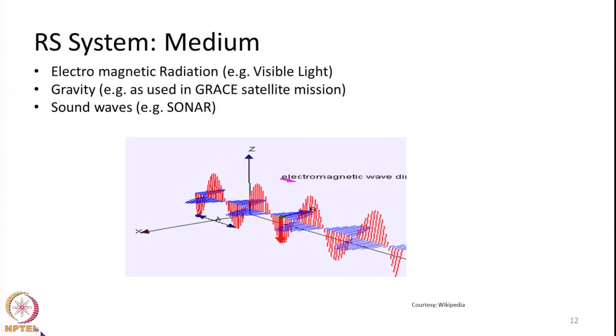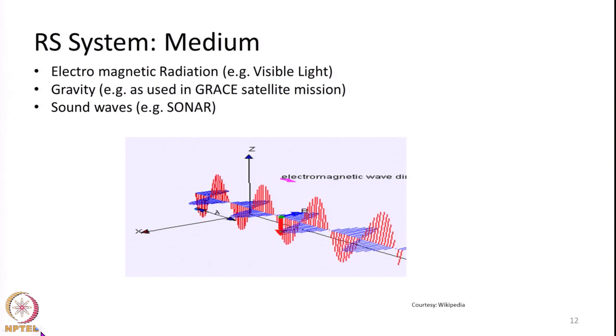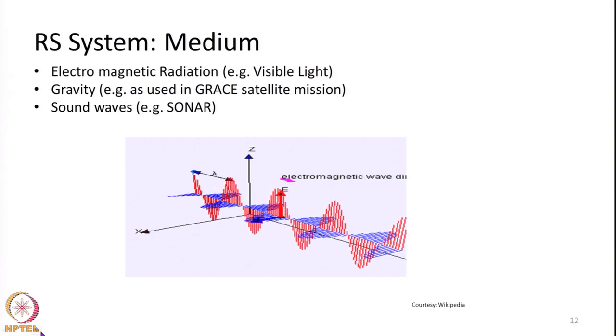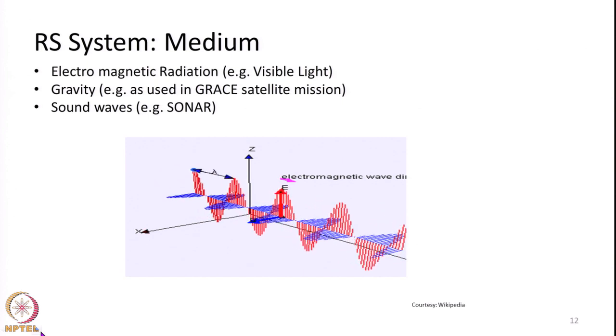In normal remote sensing, whatever we do with our regular satellites, we use electromagnetic radiation as the primary source of energy. What is electromagnetic radiation? The best example of electromagnetic radiation is the visible light that we see.